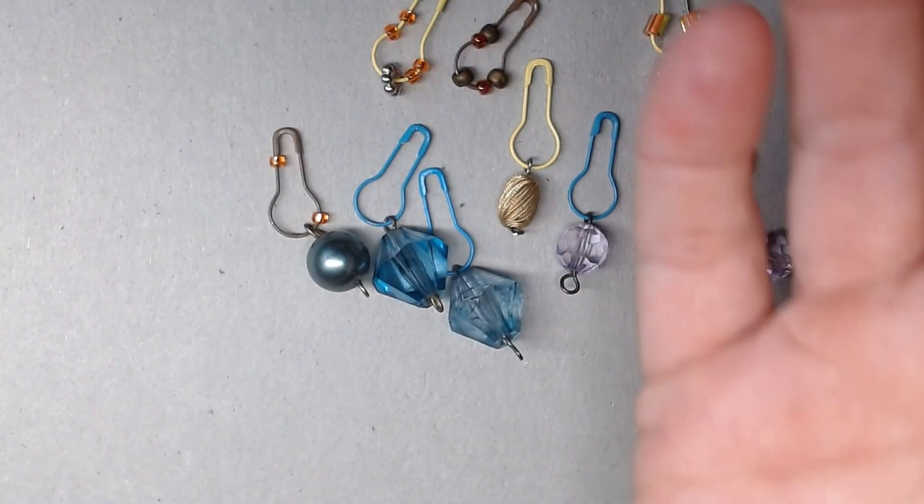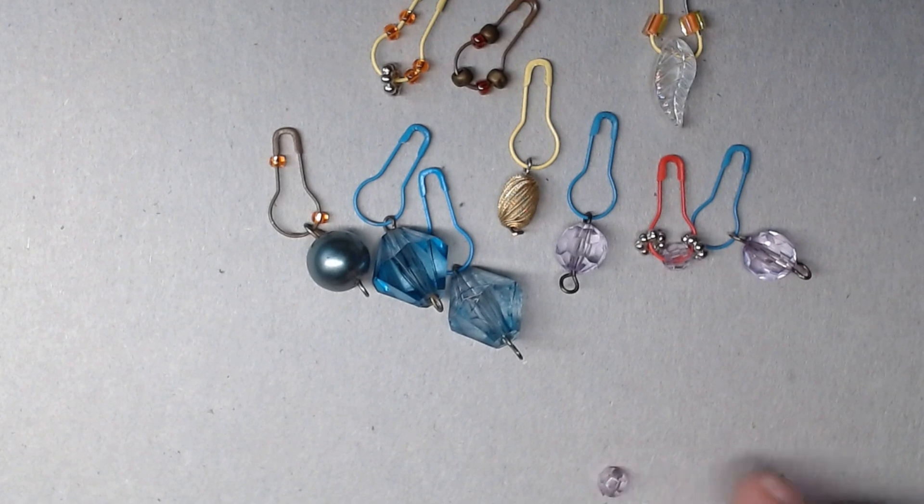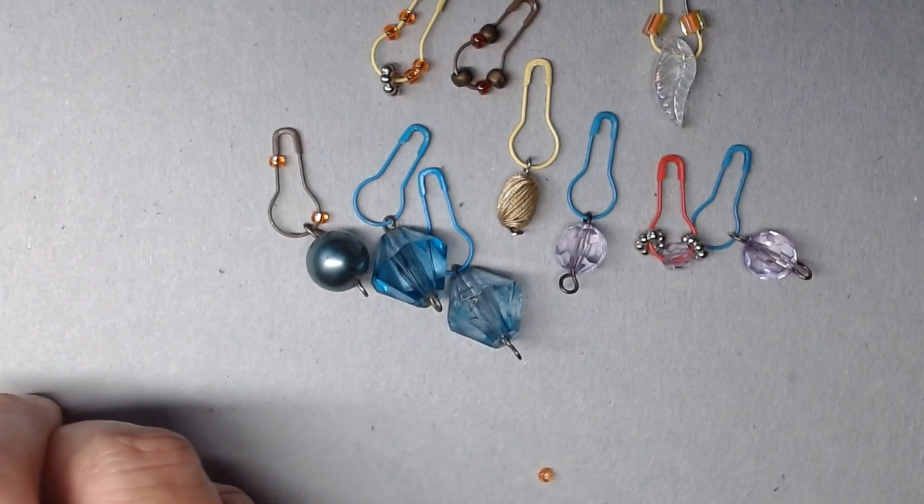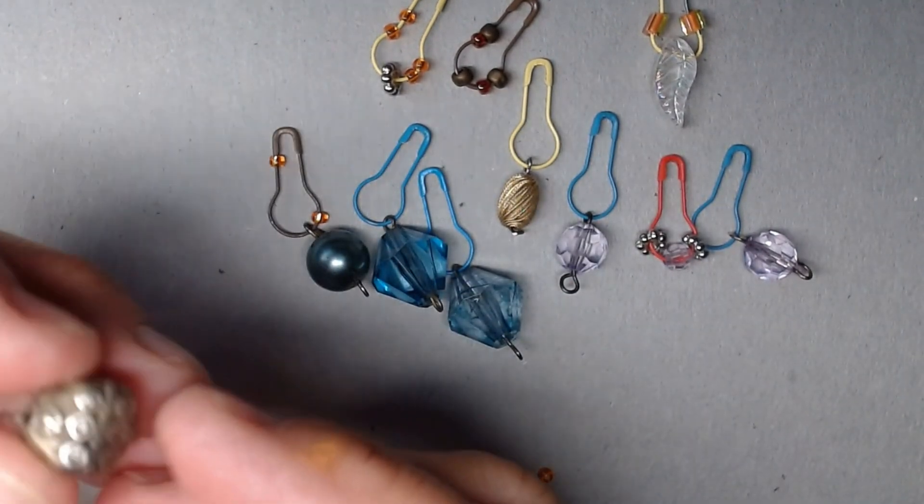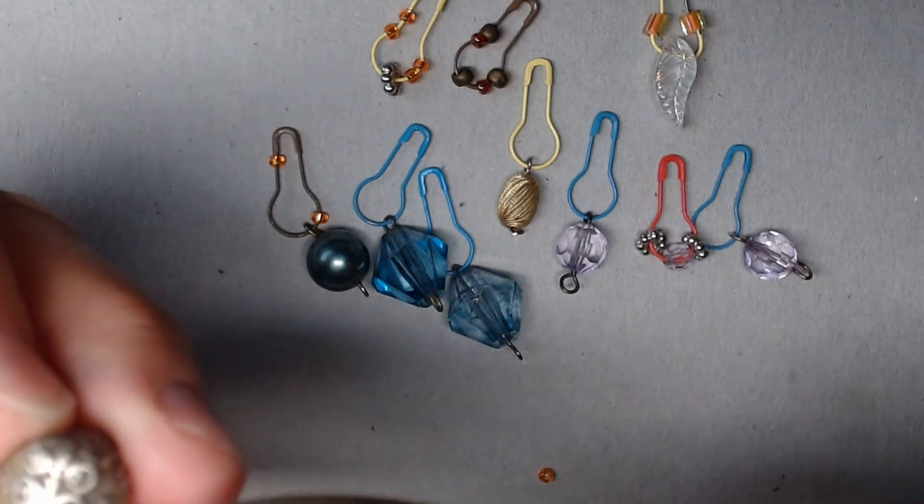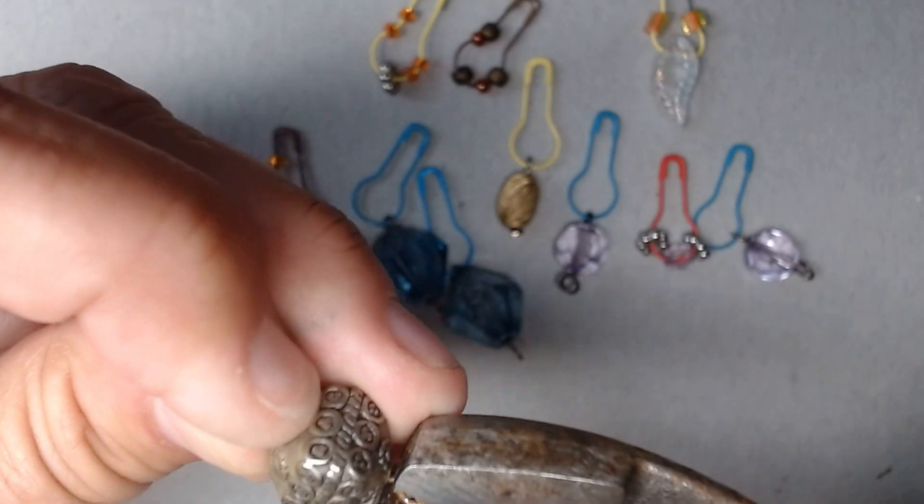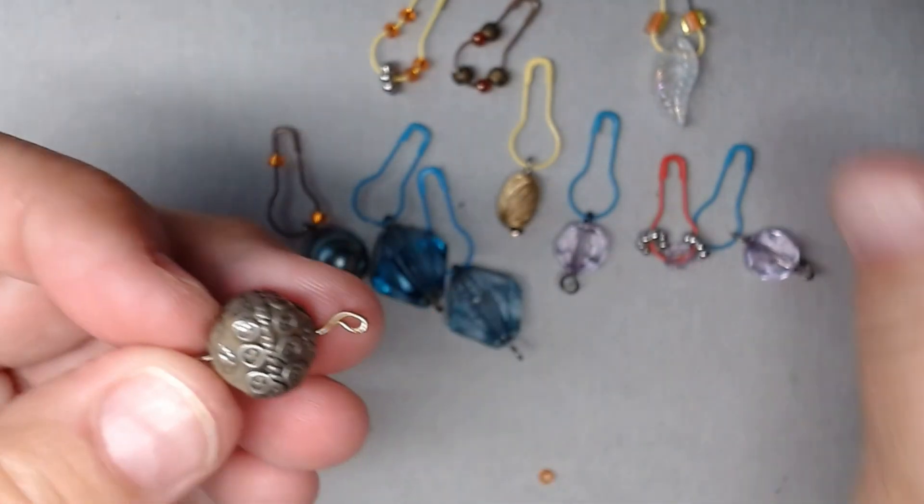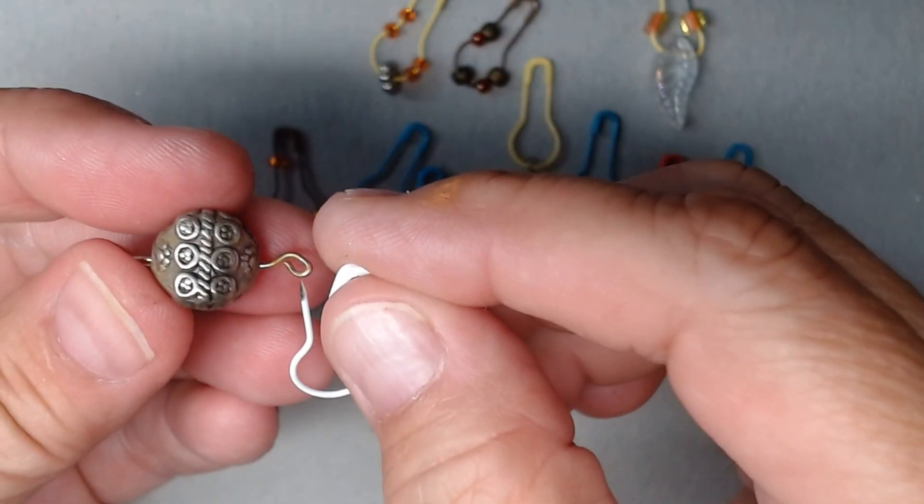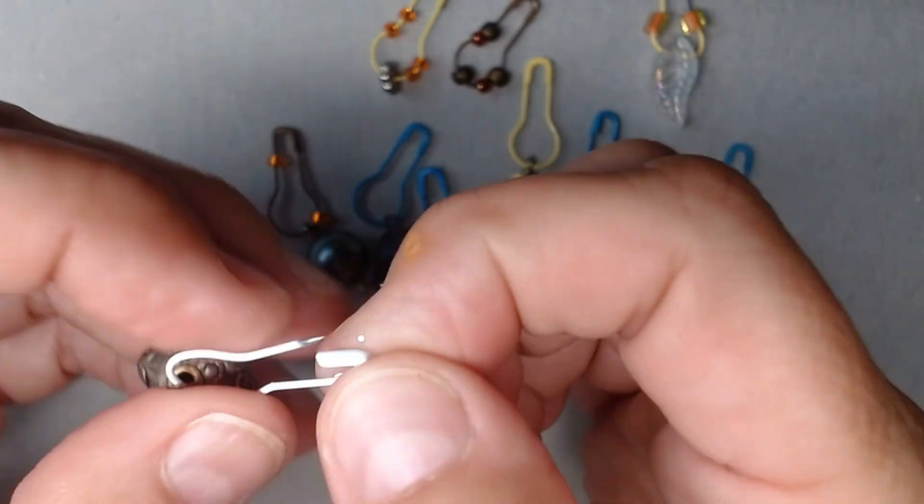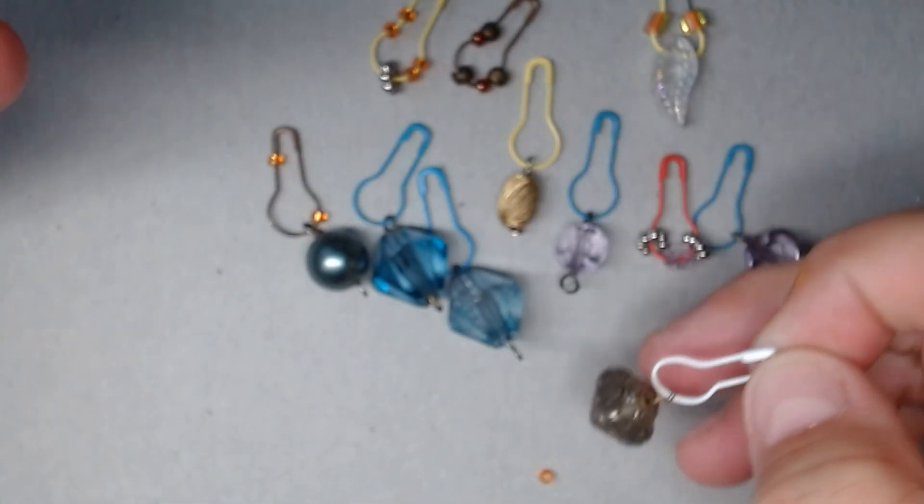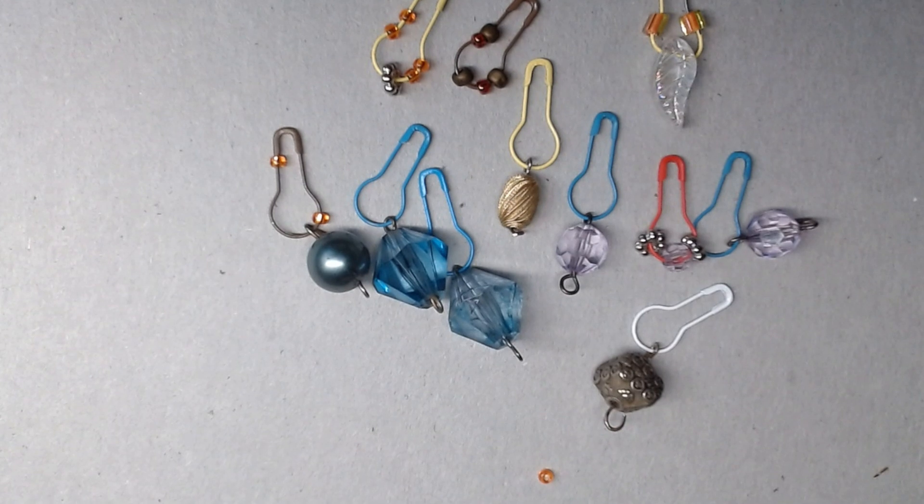So you can take pretty much any necklace that you have or, most of us that do a lot of crafting have a lot of beads sitting around. Beads of different sorts, beads of different types. You can use any bead that has a hole in it that you can put a pin through. And you can go ahead and make your stitch markers.